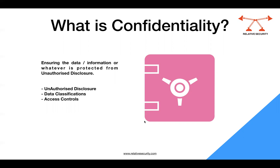Any unauthorized disclosure will lead to a breach of confidentiality. How do you ensure that the data or information you're protecting is not open to unauthorized persons? You classify your data in the form of top secret, secret, private, or publicly available.